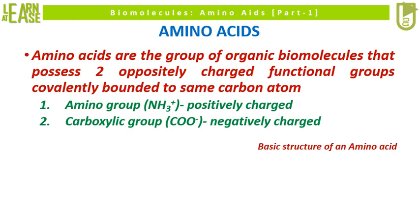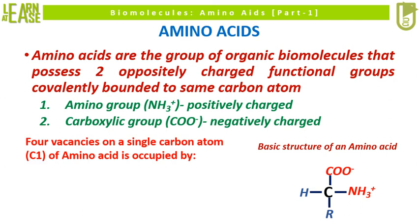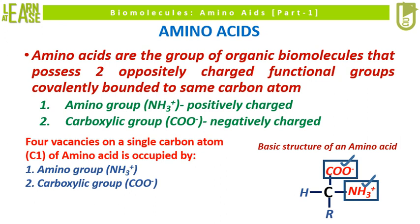The basic structure of an amino acid is shown in the image at the bottom right. In the image, 4 vacancies on a single carbon atom — that is, C1 of the amino acid — are occupied by the amino group, carboxylic group, a proton, and R chain.